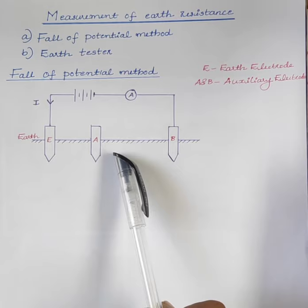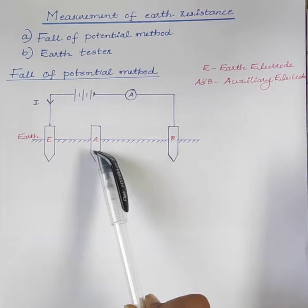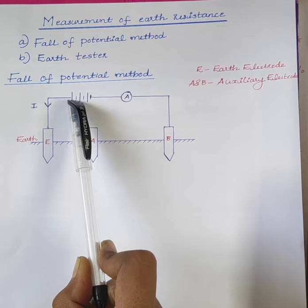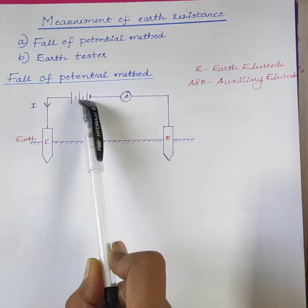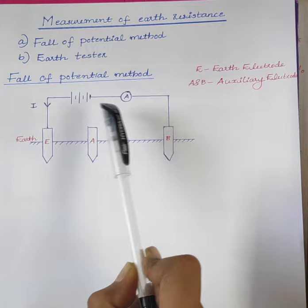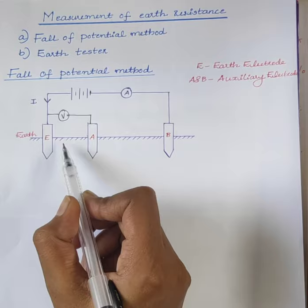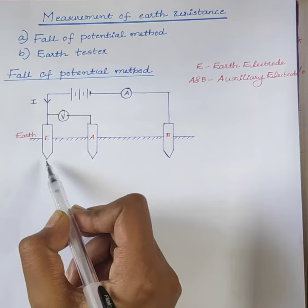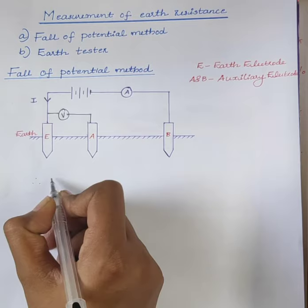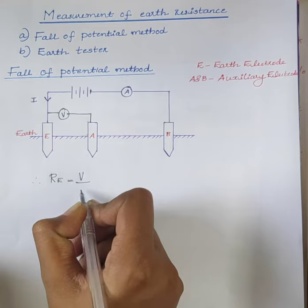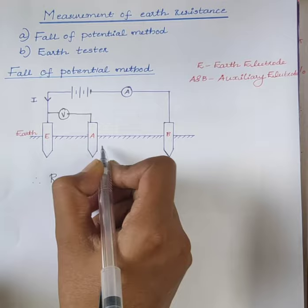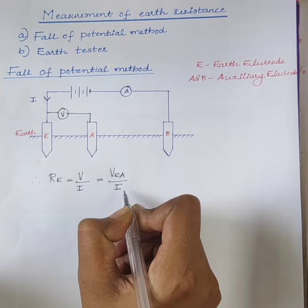Resistance measurements are done for various positions of electrode A between E and B. The current passes through the earth electrode and auxiliary electrode B, and back to the source. This current is measured with the help of an ammeter. Using a voltmeter V, the potential difference between E and A is measured for a given current I. Therefore, the resistance of the earth, R, is equal to the voltmeter reading divided by the ammeter reading, which is equal to the voltage between E and A divided by the current through the earth, I.